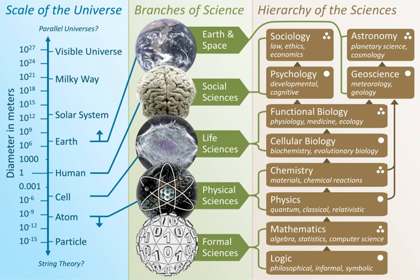Natural science is a branch of science that seeks to elucidate the rules that govern the natural world by applying an empirical and scientific method to the study of the universe. The term natural sciences is used to distinguish it from the social sciences, which apply the scientific method to study human behavior and social patterns, the humanities, which use a critical or analytical approach to the study of the human condition, and the formal sciences.